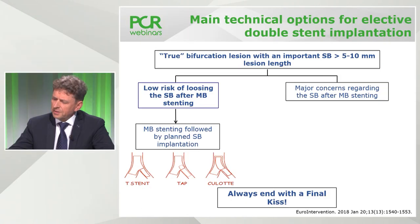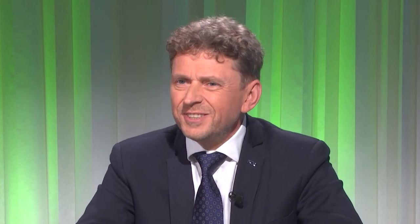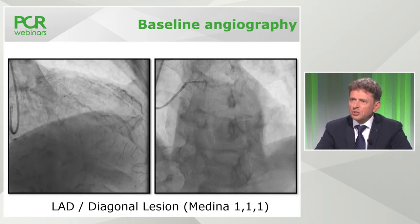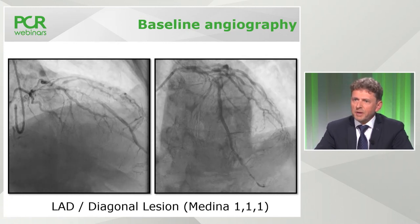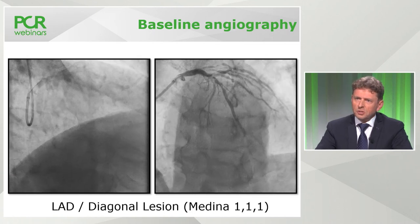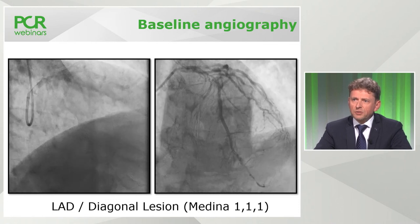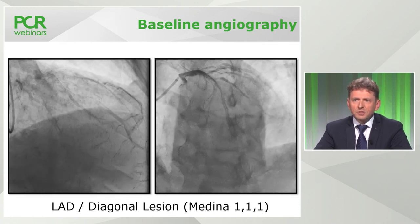Maciej, do you agree? I agree with what Adrian said — this lesion is really very complex with involvement of the huge side branch, the only side branch we have for the LAD, which is the diagonal branch. You cannot fix this long lesion in a side branch just with one stent positioned in the main vessel. It is possible to start with a provisional approach, but I think the chance of losing the vessel is too high not to start from the side branch stenting first.